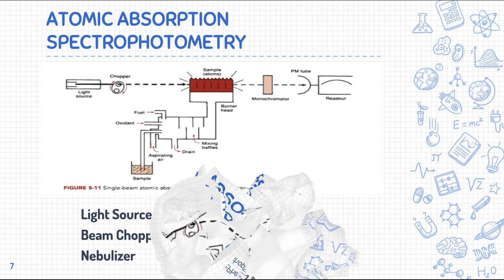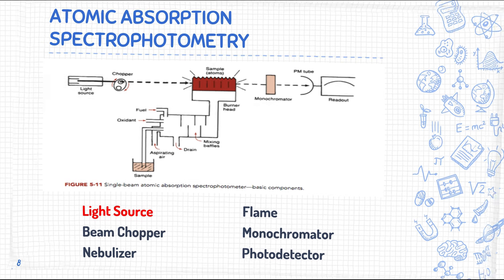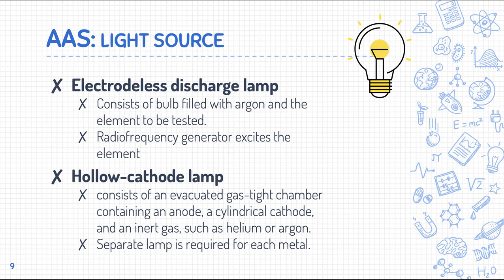The first component is the light source — the source of incident light. In AAS we have two types: the electrodeless discharge lamp and the hollow cathode lamp. The electrodeless discharge lamp consists of a bulb containing argon and the element to be tested, and uses a radio frequency generator to excite the element.